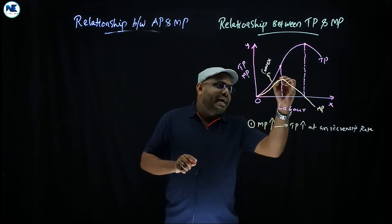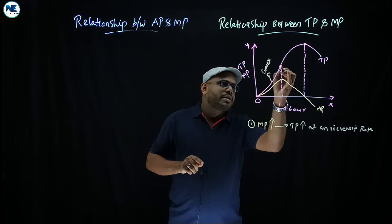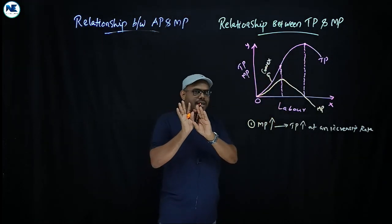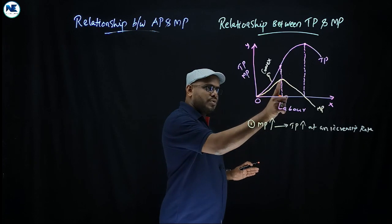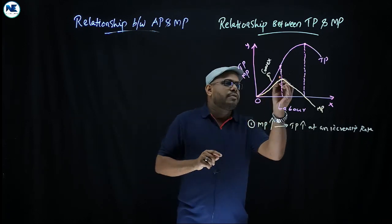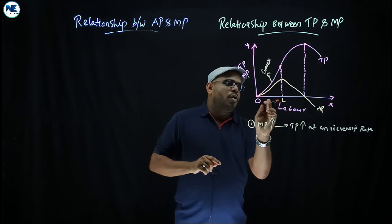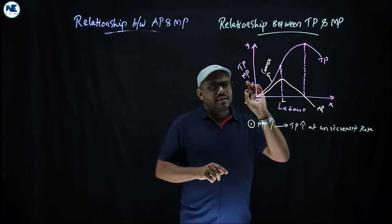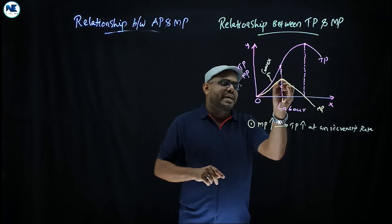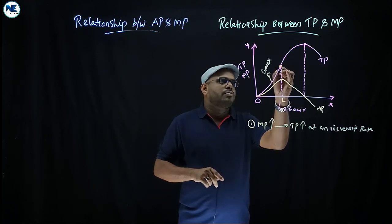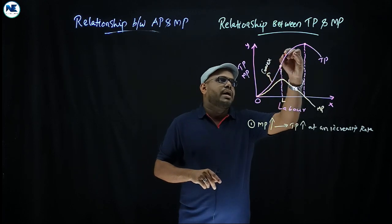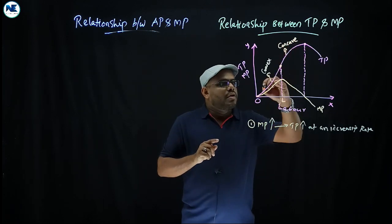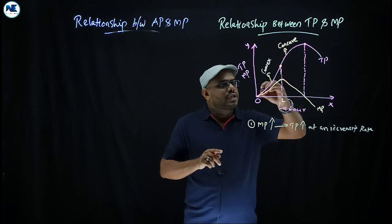When marginal product reaches its maximum, that is a key point. Total product is increasing at an increasing rate up to that point. When marginal product gets its maximum, total product shifts from convex shape to concave shape. This is the point of inflection.